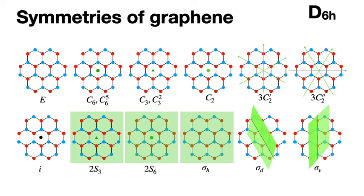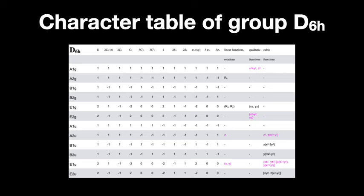Once you know the point group symmetry D6H, you go to the character tables available in many databases and easily found online. This character table is a big table because you have lots of symmetries. On the first row you have all the symmetries we just discussed, and then you have a number of representations. The character table is basically the trace of the transformation matrix for each operation. The column for linear, quadratic, and cubic functions will come in very handy later.